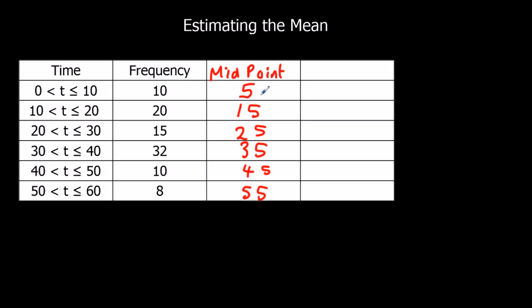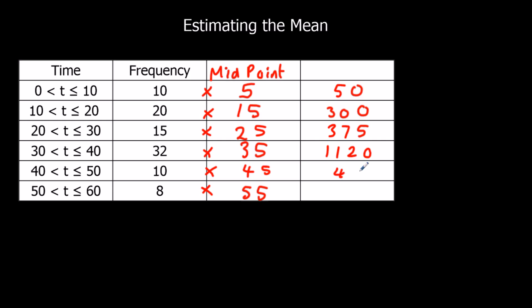So we've got 10 fives. We need to multiply midpoint by frequency to add them all up, because we want to add them up and divide by how many — that's still how we work out the mean. So: 10 times 5 is 50; 20 times 15 is 300; 15 times 25 is 375; 32 times 35 — we'll use the calculator — is 1120; 10 times 45 is 450; and 8 times 55 is 440.